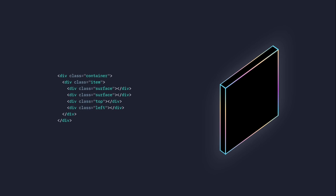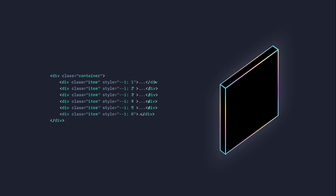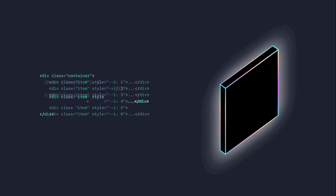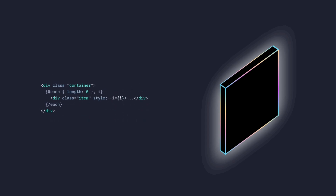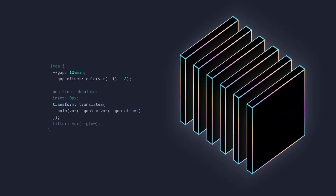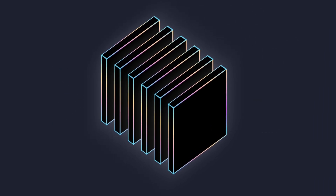Now we just need to repeat the items however many times we want. This is how it would look using regular HTML. We're also going to pass an index so we can space them evenly. I'm going to use Svelte to make my life easier — I'm going to loop over the item 6 times and pass the index. Right now the items are stacked on top of each other, so let's fix that. Inside the item we're going to add a gap of 10vmin and a gap offset based on the index, passing it minus 3 so it starts from -3 to 3. Then we transform it in 3D space using translateZ, taking the gap and multiplying it by the gap offset. And now we have our beautiful walls.